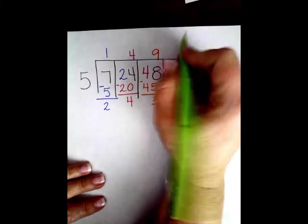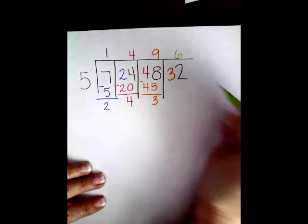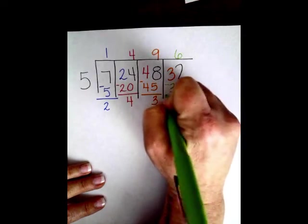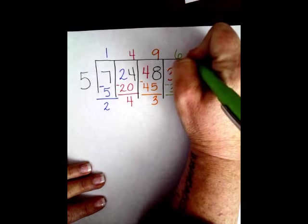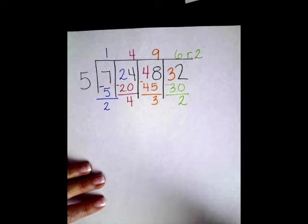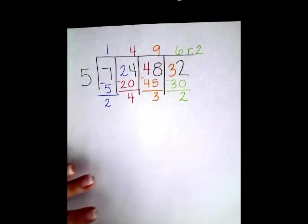5 goes into 32. 6 times, 6 times 5 is 30. I'm going to subtract and have 2 left over. Remainder 2. I know it looks a little funky when you're first getting used to it, but I swear it's not that bad.